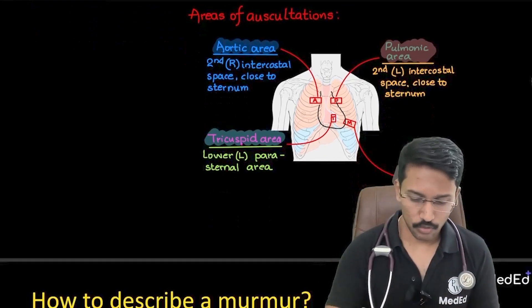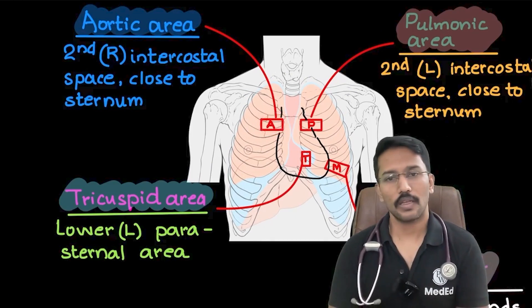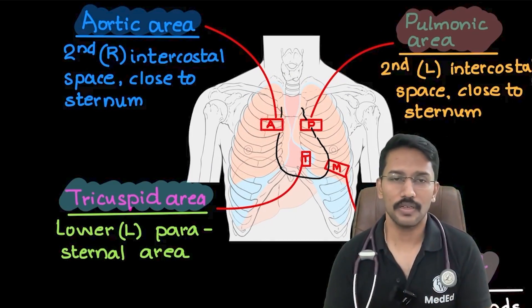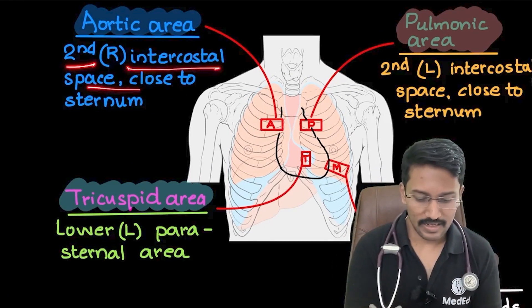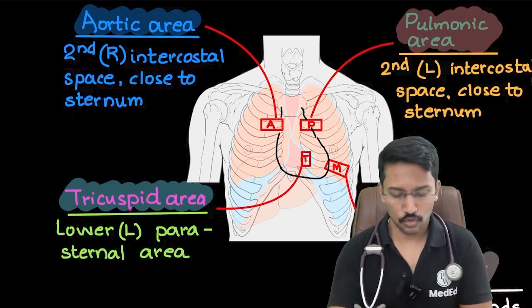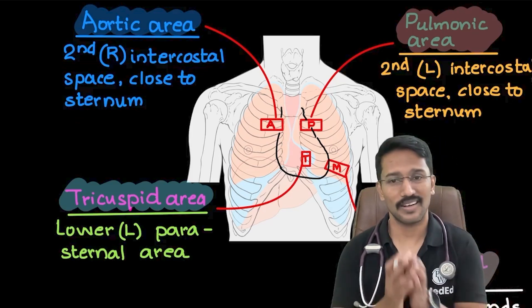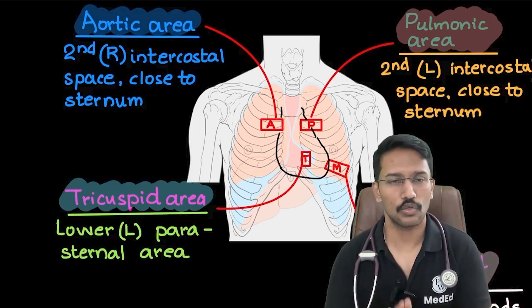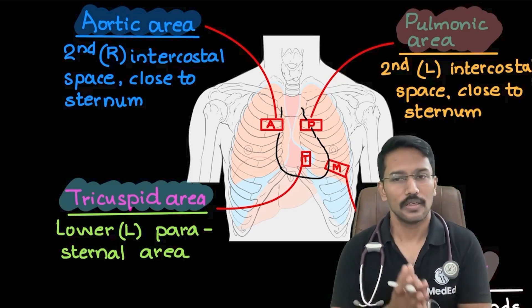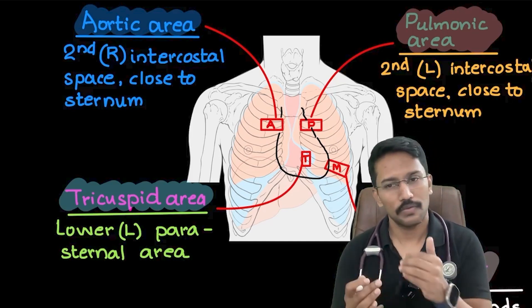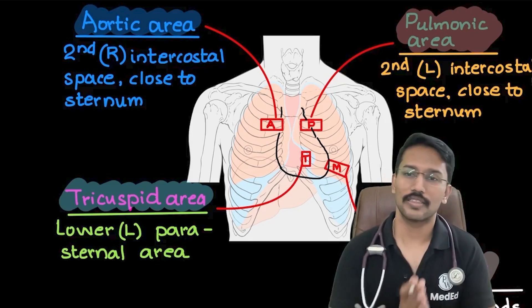The first area is the aortic area. The aortic area is on the right second intercostal space close to the manubrium sternum — right second intercostal space close to the sternum. Now, the question is: the aortic valve is on the left side of the heart, so why is the area on the right side?